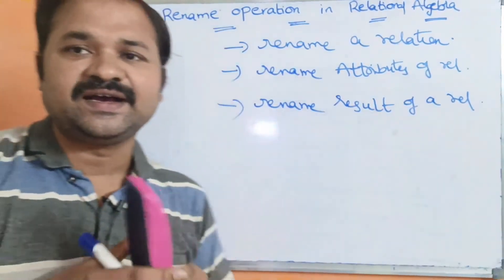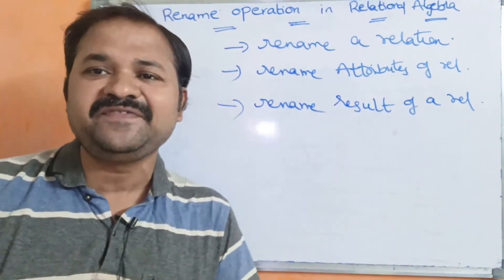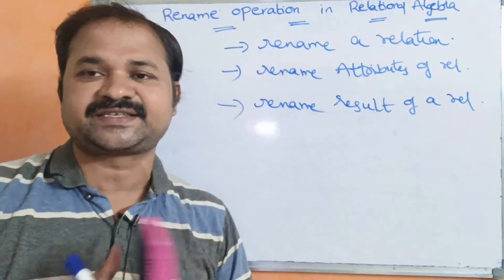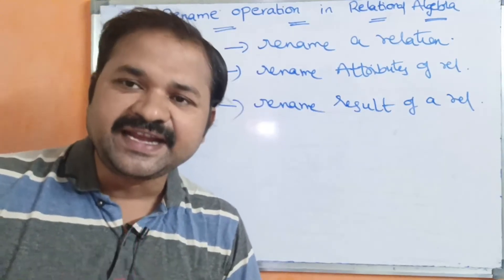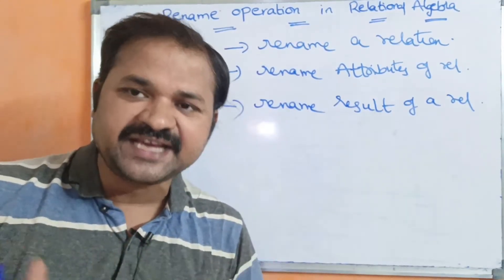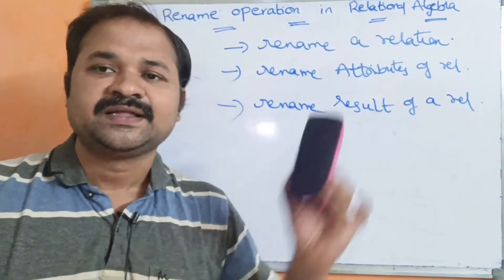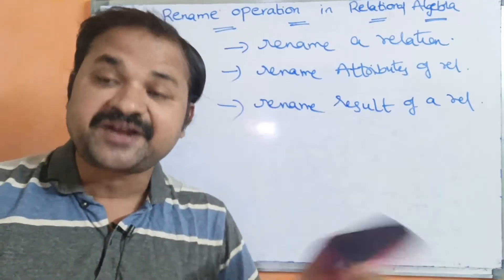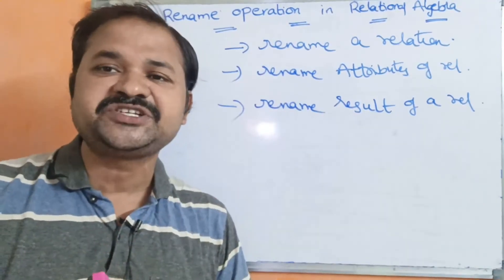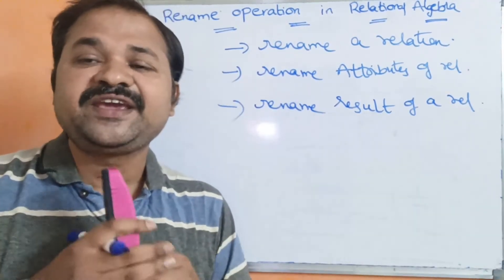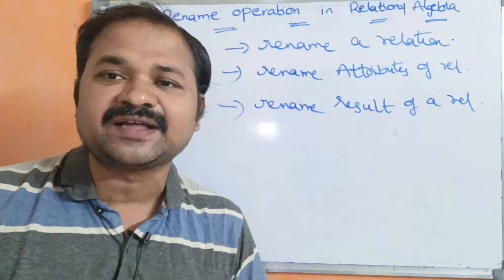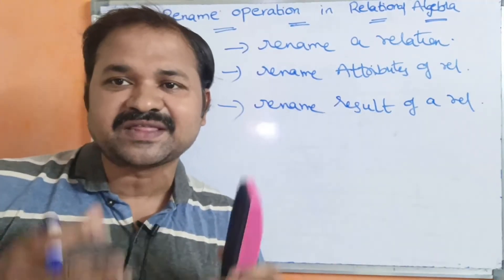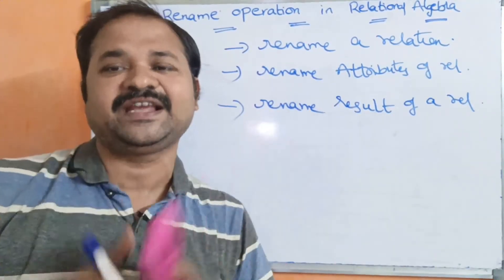By using the rename operator, mainly we can do three activities. The first one is we can rename a relation. The second one is we can rename the attributes of the relation. And the third one is we can rename the result — that is, the output — of a relation.